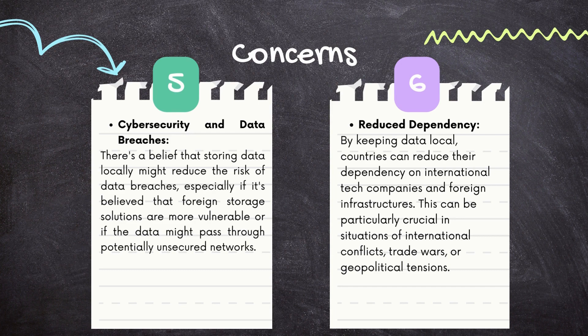Sixth, reduced dependency: by keeping data local, countries can reduce their dependency on international tech companies and foreign infrastructures. This can be particularly crucial in situations of international conflicts, trade wars, or geopolitical tensions.